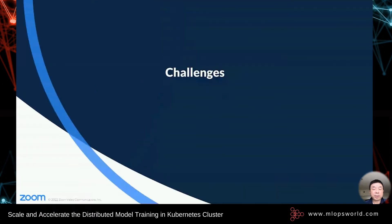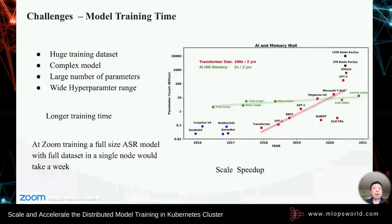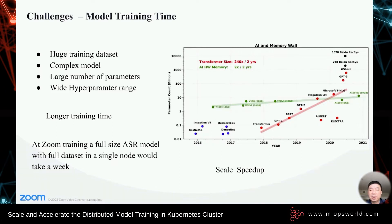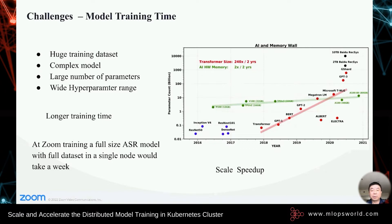Let's talk about the challenges. As modern machine learning technology evolves, datasets have become larger and larger — 100GB datasets are very normal. Models have also become very complex, with millions or even billions of parameters, like GPT-3 and other language models. The hyperparameter search space is also very wide. This means training takes much longer. For example, at Zoom, if we train a full-size ASR model on a single node with a full dataset, it could take a week or more. We have to scale up and speed up.